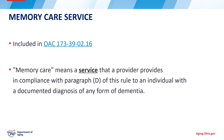The memory care service is included in the requirements for the assisted living service, which can be found in the Ohio Administrative Code 173-39-02.16. Memory care is a service that a provider provides to an individual with a documented diagnosis of any form of dementia. Memory care providers — those that are certified to provide memory care — must comply with all basic assisted living requirements along with memory care requirements.